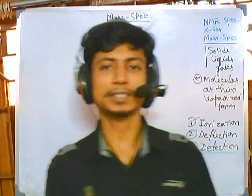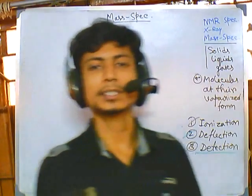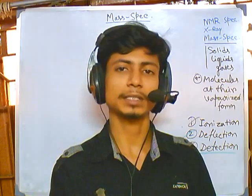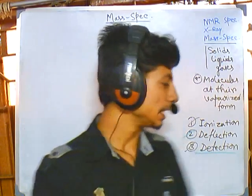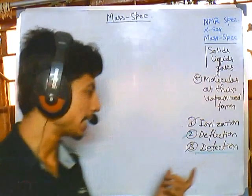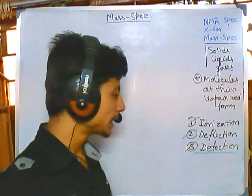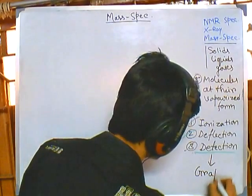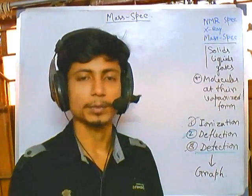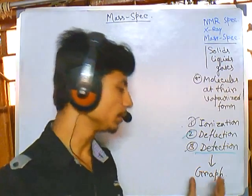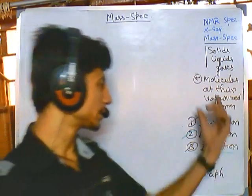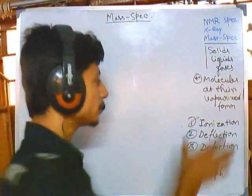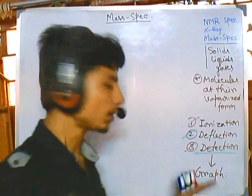Welcome back. We are talking about mass spectrometry. In this video we'll be talking about the plotting of graphs in mass spectrometry and the importance of these graphs. After the three steps through the mass spec analyzer — ionization, deflection, and detection — going through all the stages, it finally gives us the graph. This graph is the most important part. The three stages are handled by the machinery, which gives us the graph.